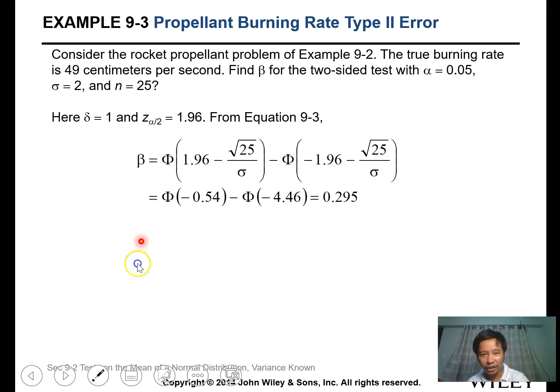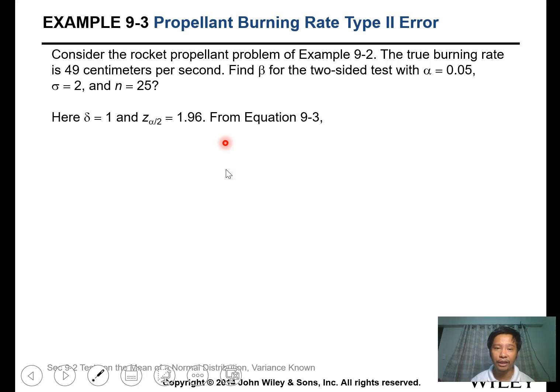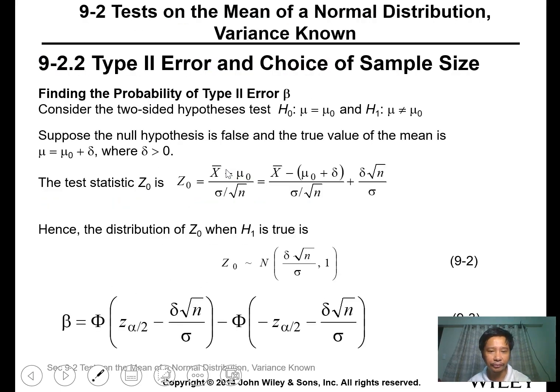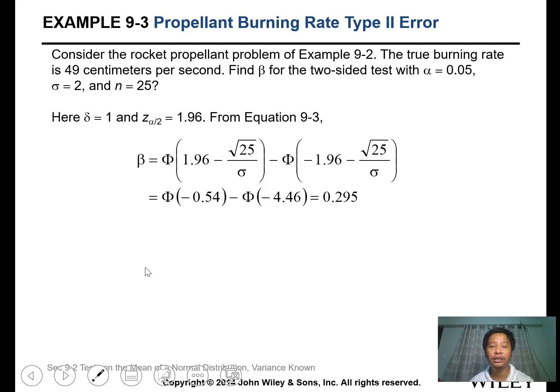Our z calculated for 0.05 is 1.96. From the equation for beta, substitute all values. Delta square root n over sigma, so sigma is 2. Calculating, we obtain 0.291.